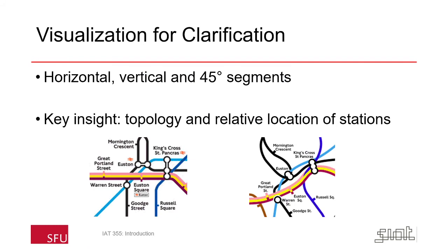Part of the technique here is to eliminate unnecessary detail. The real geography is reformulated and distorted to show lines only on horizontal, vertical, and 45-degree segments. The key insight, of course, is that the topology and relative locations of stations is more important than the precise geographic details of where the stations actually are.